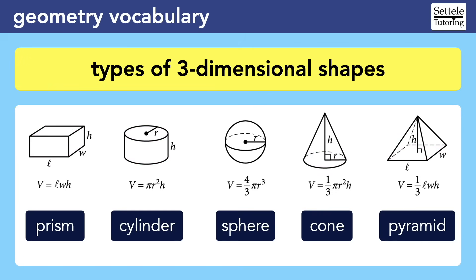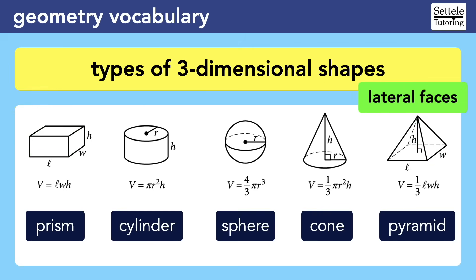Very rarely, a question might mention a lateral face of a three-dimensional shape. The word lateral just means side, so the lateral faces are the faces on the sides. A prism has four lateral faces, all of which are rectangles — we can see the front and right lateral faces easily, but there's also a back and left side. The pyramid also has four lateral faces, but all of these are triangles. Technically, the cylinder, sphere, and cone do not have lateral faces, but if you're trying to find the surface area of a cylinder, you'd still need to include the rounded side.